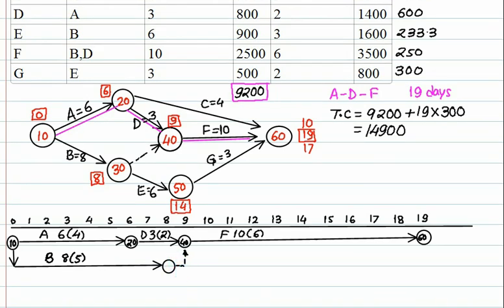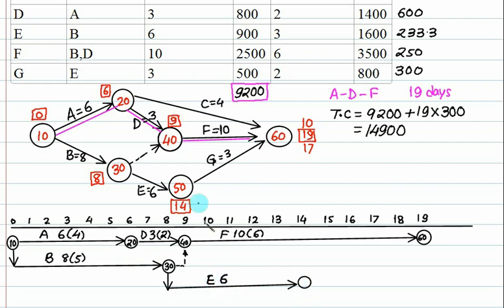From node 30 one branch goes to node 40 and another branch goes to node 50. One branch starts from node 30 — that is activity E — and it finishes by day 14, so draw a circle on day 14. Activity E takes 6 days and if you crash it you can finish in 3 days. After E, draw activity G for 3 days: that is days 14 to 17. Activity G takes 3 days and can be crashed to 2 days. The remaining connection is a dotted dummy line.